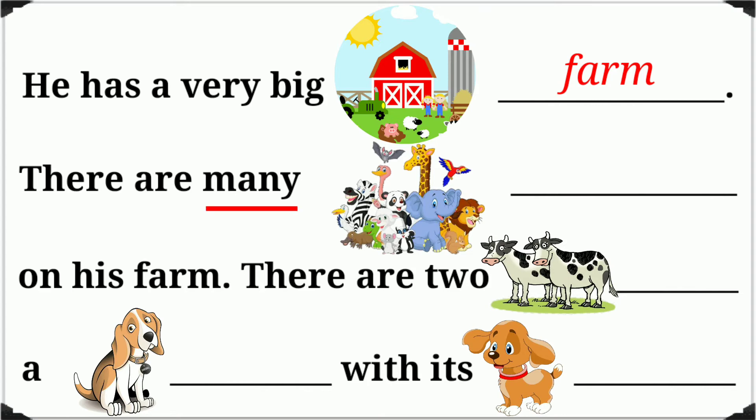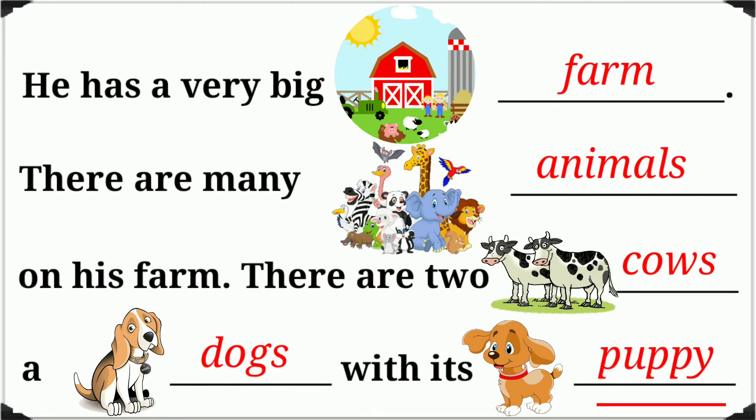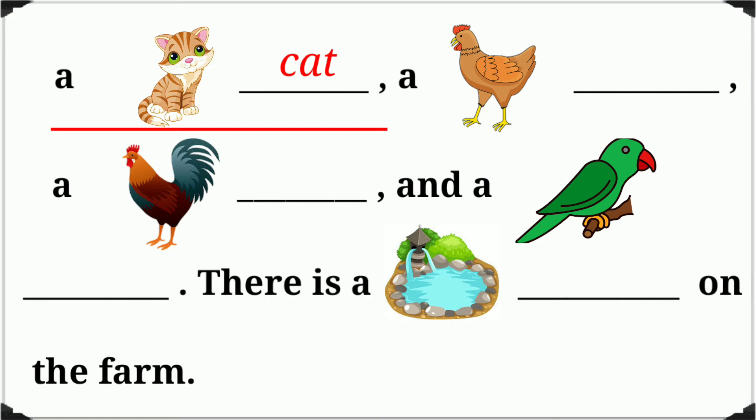There are many... on his farm. There are many animals on his farm. There are two cows, a dog with its puppy, a cat, a hen, a cock, and a parrot.